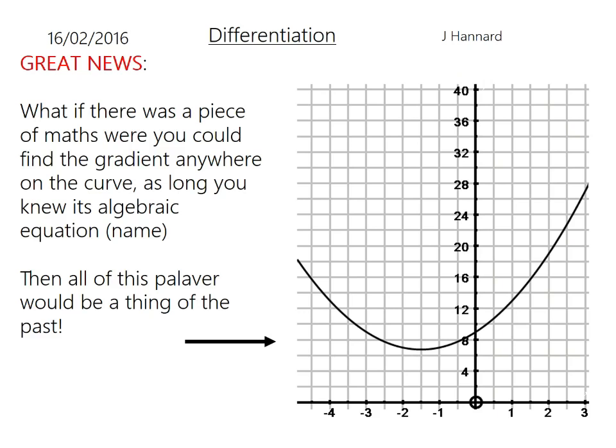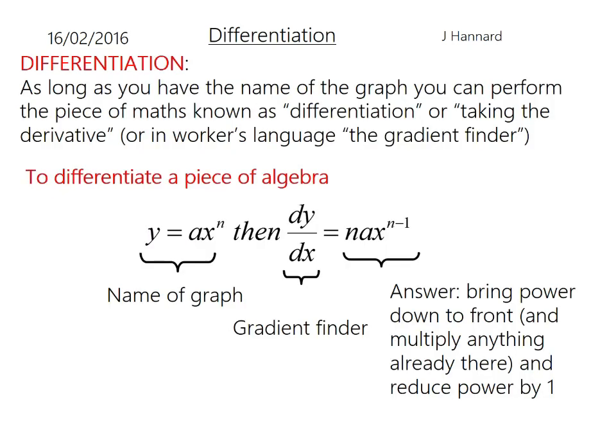So what happens if there was a piece of maths where you could find the gradient anywhere along the curve as long as you knew its algebraic name or the equation of the curve? Then all of this palaver would be a thing of the past. Drawing points, drawing little triangles saying oh that's a 10, that's a 1.5 so that must be whatever gradient. No, we use differentiation when this was discovered by the great Isaac Newton. As long as you have the name of the graph you can perform a piece of maths known as differentiation or taking the derivative or as you might want to call it the gradient finder.